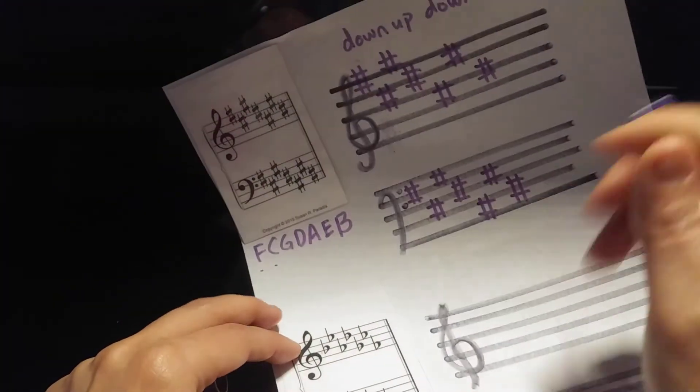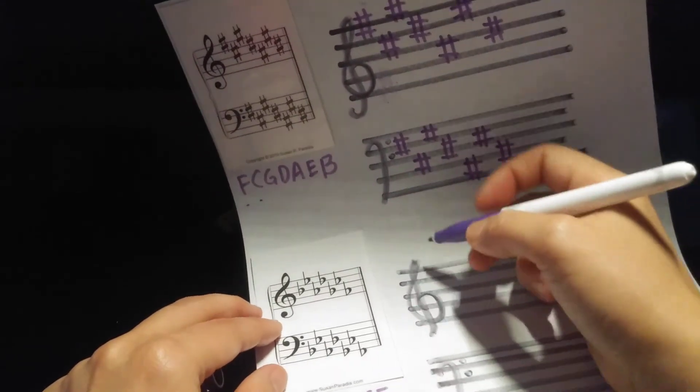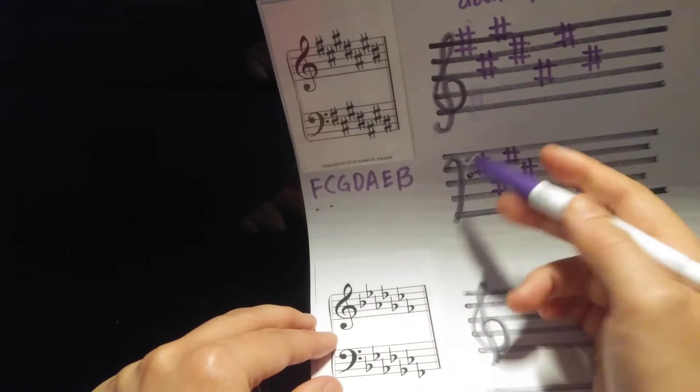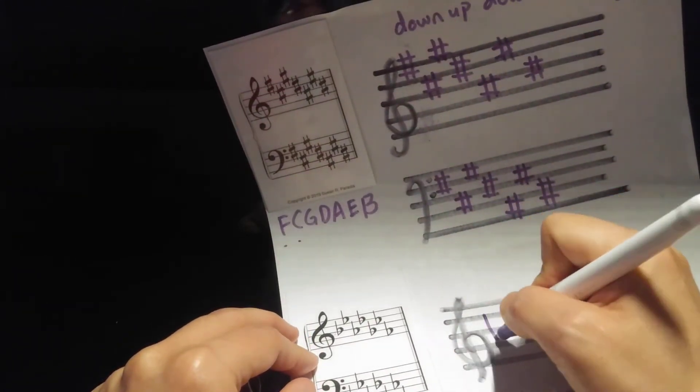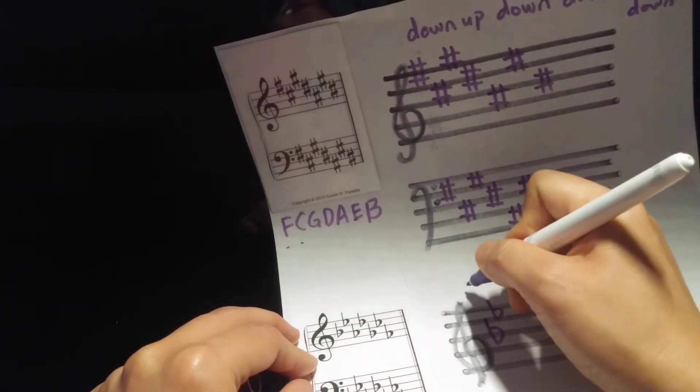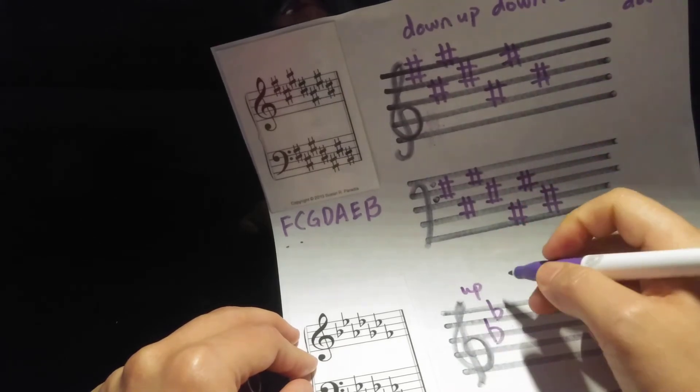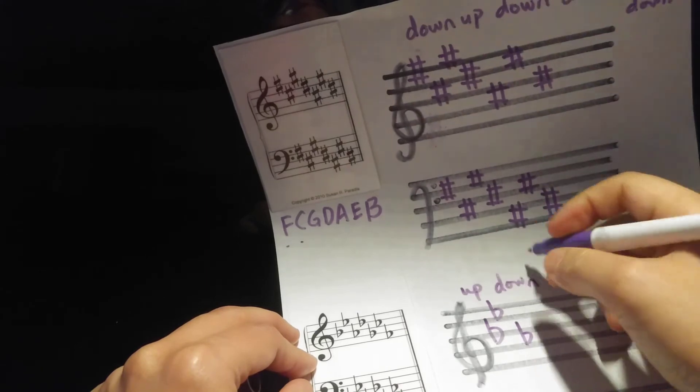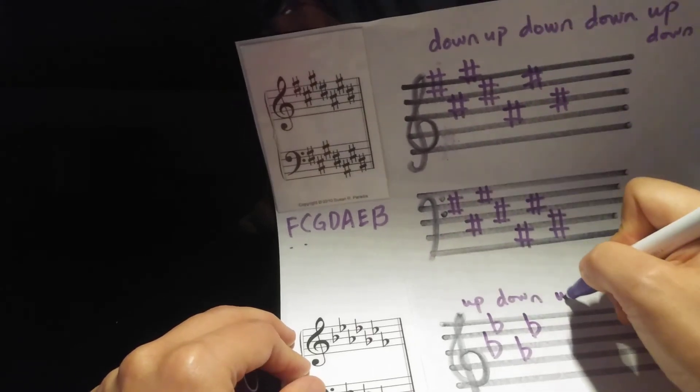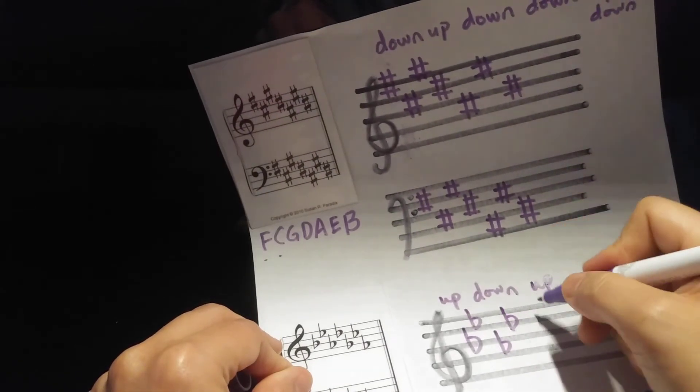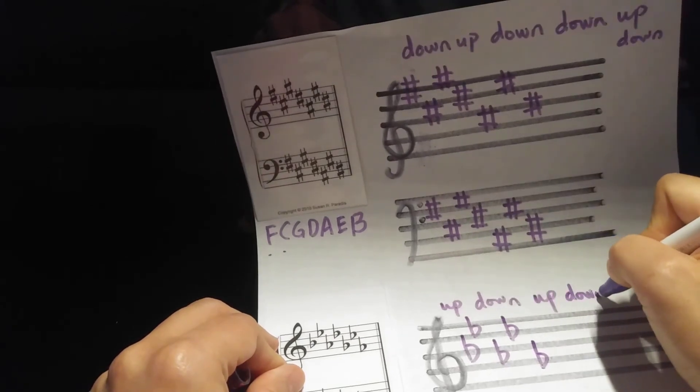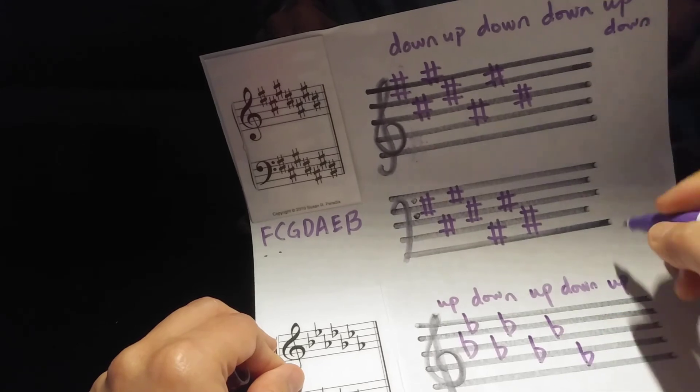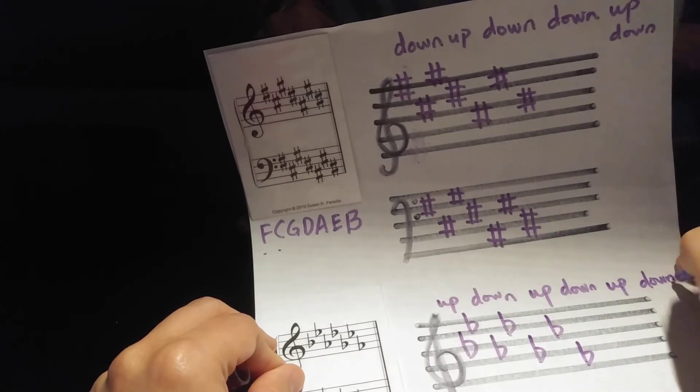For the flats, it's actually easier. B-E-A-D. If you look at the shape: up, down, up, down, up, down. It just alternates between up and down. So first you start here, you go up, then down, then up, then down, then up, then down, then up, then down. Very easy.